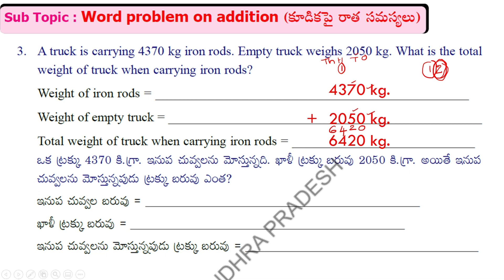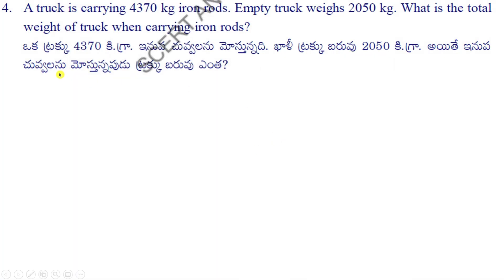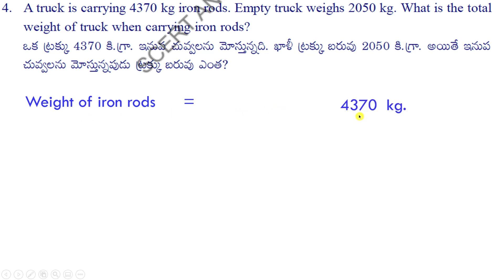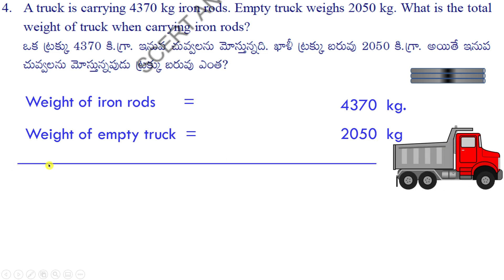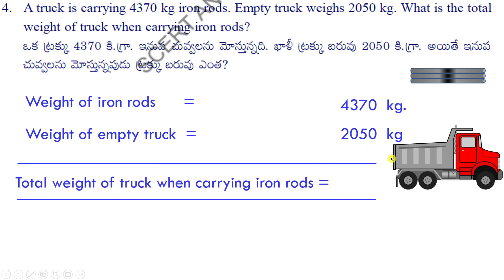Total weight of truck when carrying iron rods. A truck is carrying 4,370 kilograms of iron rods, empty truck weighs 2,050 kilograms. What is the total weight of the truck when carrying iron rods? Weight of iron rods is 4,370 kilograms, weight of empty truck is 2,050 kilograms. Total weight of the truck when carrying iron rods is 6,420 kilograms.